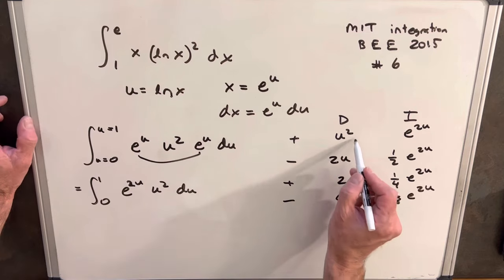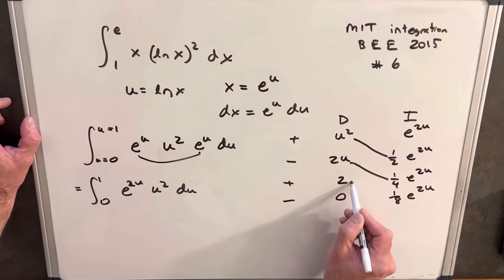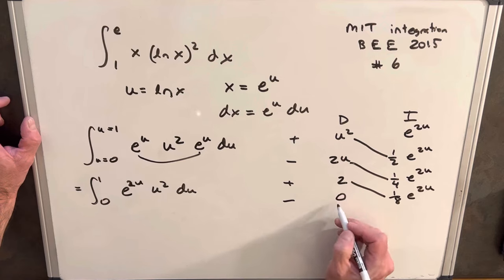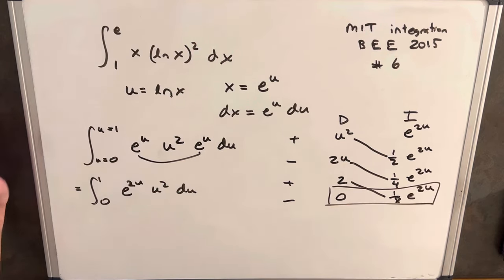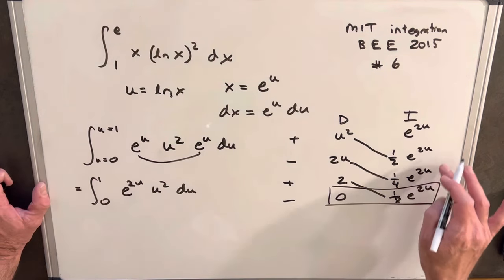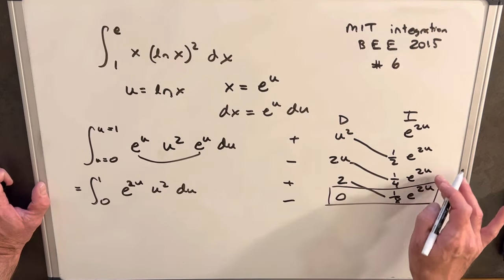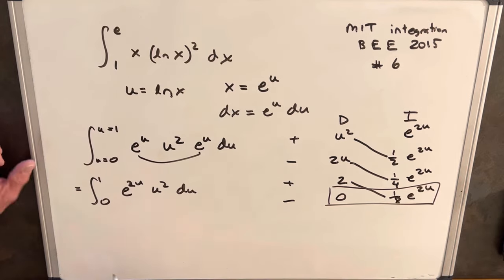So our result will just be these diagonals like this. The last row would be an integral, but we have a 0, so that's going to 0 out this whole last piece here and we'll ignore it. And noticing that each term here has an e to the 2u, when I rewrite this, I'm going to pull that out, just kind of factor it out all in one step.